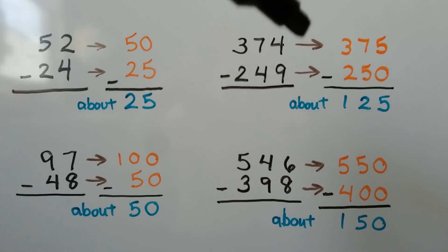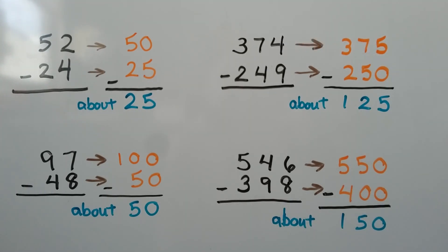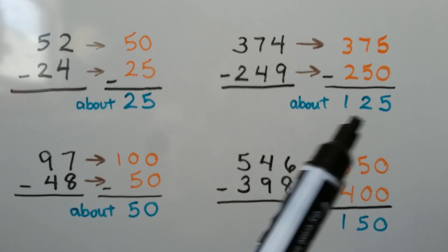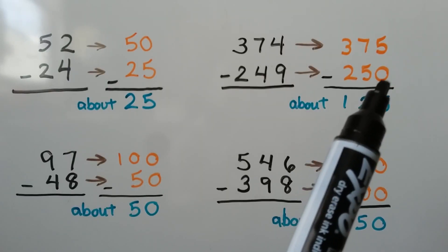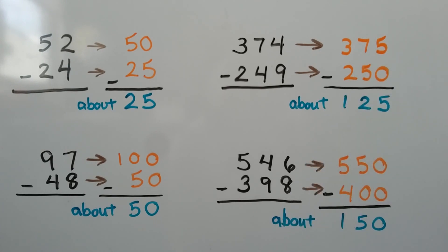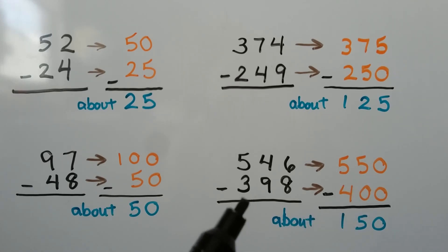We have 374. We could say it's 375. We have 249 — we could say that's about 250. When we find the difference, it would be about 125. 375 is 75 more than 300, and 250 is 50 more than 300, so the 50 and the 75 difference gives us 125. For 546, we could say that's 550. For 398, we could say that's about 400. 550 minus 400 would estimate to be about 150.